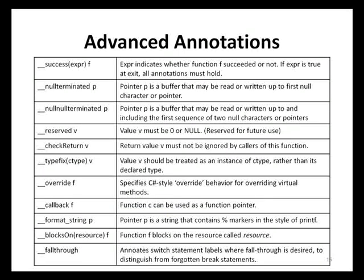Advanced annotations are used to describe function behaviors that may not be expressible by buffer annotations. While these annotations may not be specifically focused towards finding buffer overruns, developers are still encouraged to use them as they can assist in finding other types of code vulnerabilities. For example, the _checkReturn annotation specifies that return values from the annotated function must not be ignored by callers. The _format_string annotation indicates that the argument is a string containing percent markers in the style of printf, and can assist static code analysis tools in identifying format string vulnerabilities.